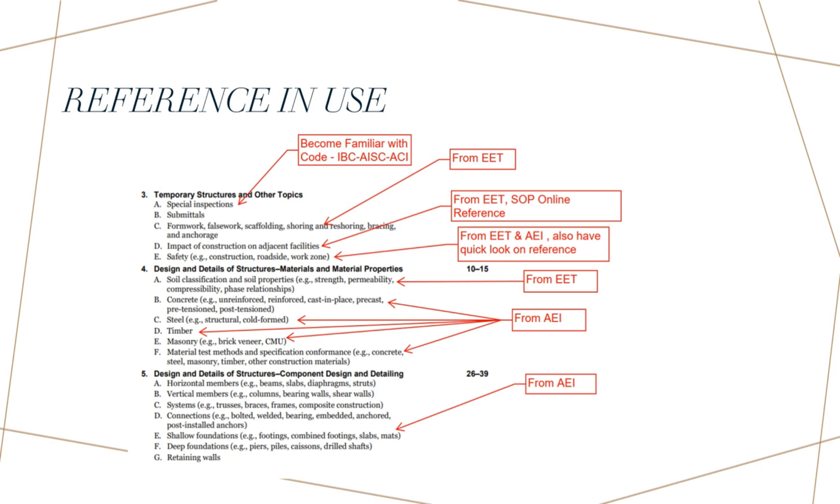For the submittals, there is not really anything that you can study and it's just based on your experience. There should not be that many questions, maybe just one question or more. For part C, which is formwork, falsework and so on, I studied the EET handbook, which was prepared for the breadth portion of the previous format of the exam. For the impact of construction on adjacent facility, I studied from EET and School of PE online references. If you search on Google, impact of construction on adjacent facility, you will find the website of the School of PE that provides some free information. For part E, which is safety, I tried to look under references provided by NCEES, and also I studied from the EET and AEI.